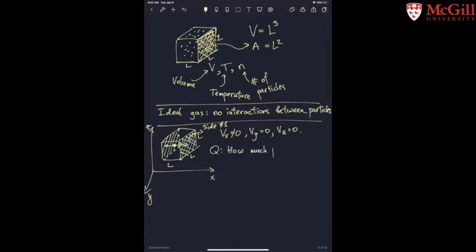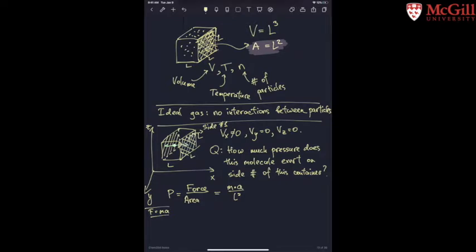So overall, we would like to find out just how much pressure does this one molecule exert on side number one of this container. Let's do this calculation. The pressure is defined as the force divided by the area on which it acts. In this case, the area of side number one is l squared, and the force using Newton's second law is simply the mass of the particle times acceleration. What is acceleration? Acceleration is the change in velocity over time. The time that we'll use for the sake of an argument is twice the time it takes for the particle to cross the box of length tl.